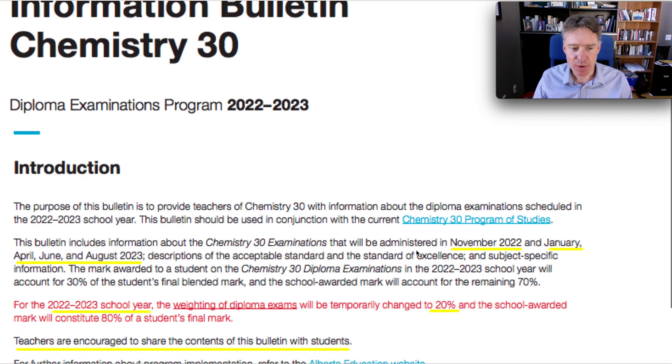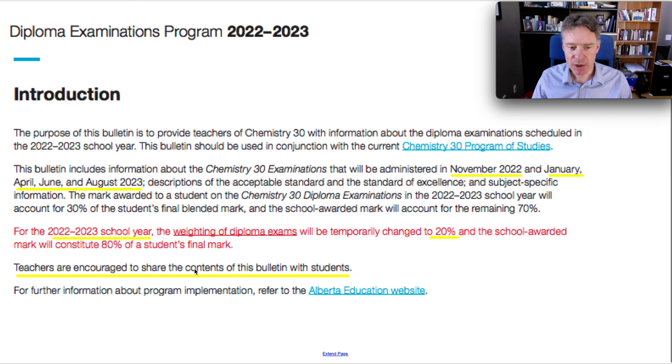One thing that is unique to this year is the weighting of the diploma is just 20% compared to the now standard 30%. So this diploma bulletin is for the November 2022, January, April, June, and August 2023 diploma exams, which the August one would be for Summer School. Teachers are encouraged to share this bulletin with students, and I'm just going to go through the highlights of what I think are important pieces.